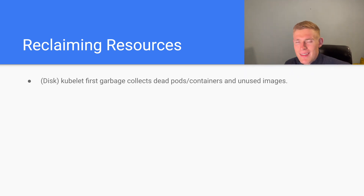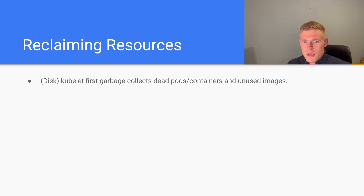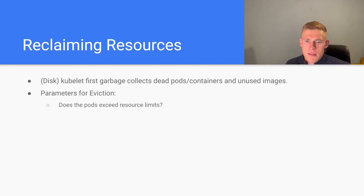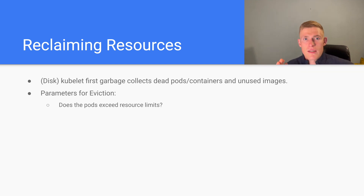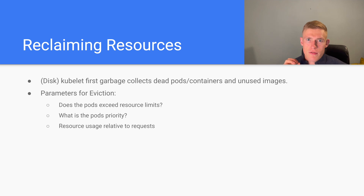When we need to reclaim resources, how is that done? First, kubelet garbage collects dead pods, containers, and unused images. Then it starts to evict pods based on: whether the pod exceeds its resource limits (pods beyond their specified limit are higher priority for eviction); pod priority (high-priority pods are less likely to be evicted); and resource utilization relative to what is requested for that pod.